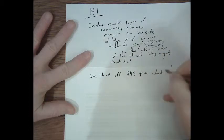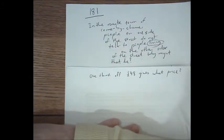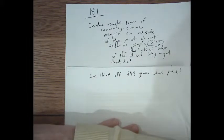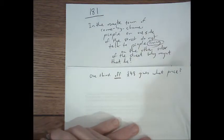So one third off 48 pounds gives what price? As it's written, if you read that carefully, it's 48 pounds. One third of that is 16. It says take one third off. So the answer is 32 pounds.